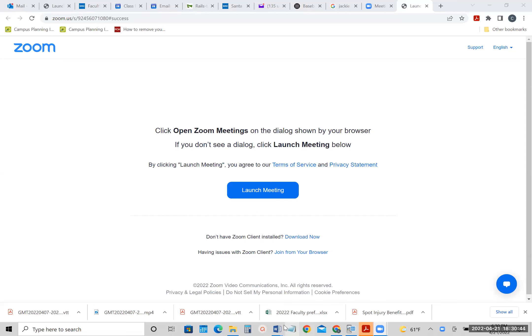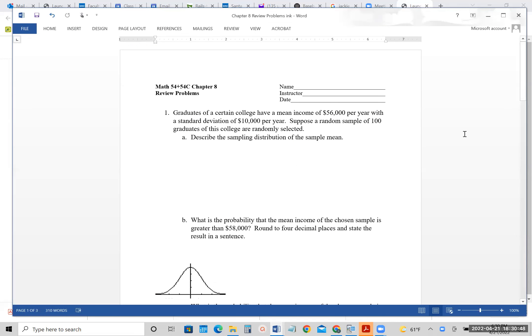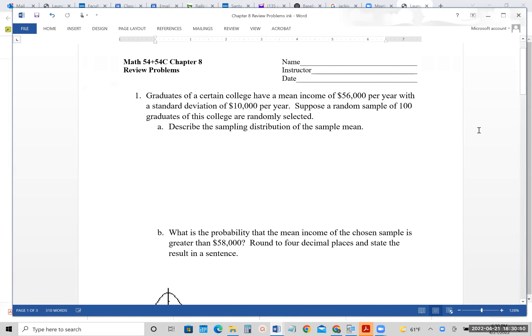Okay, this is going to be the Chapter 8 review with me going over it, so let's go for it. Graduates of a certain college have a mean income of $56,000 per year with a standard deviation of $10,000 per year. Suppose a random sample of 100 graduates from this college are randomly selected. Describe the sampling distribution of the sample mean.